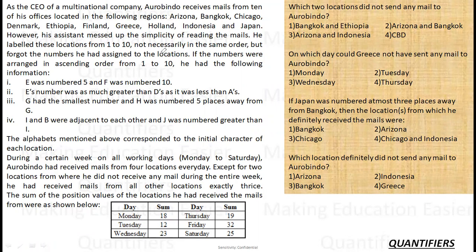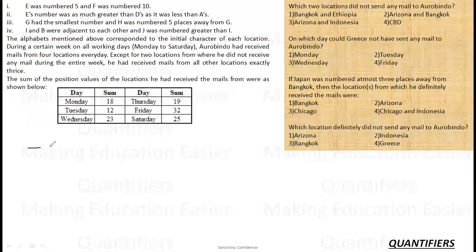If the numbers were arranged in ascending order from 1 to 10, he had the following information. So let's try to sort it up. There were 10 locations: 1, 2, 3, 4, 5, 6, 7, 8, 9, and 10.